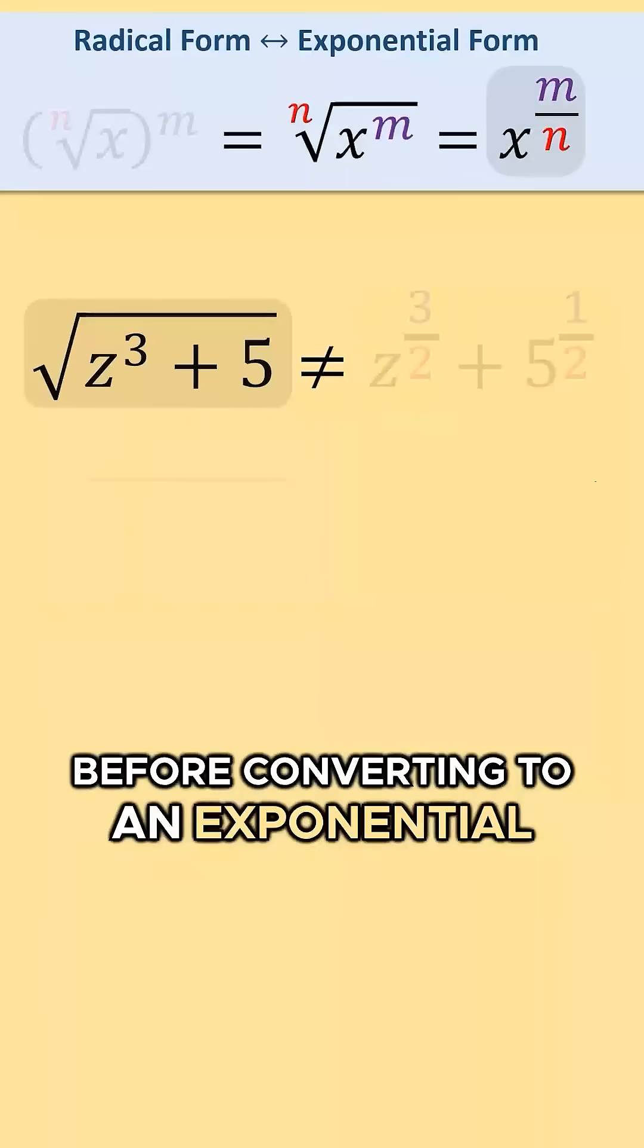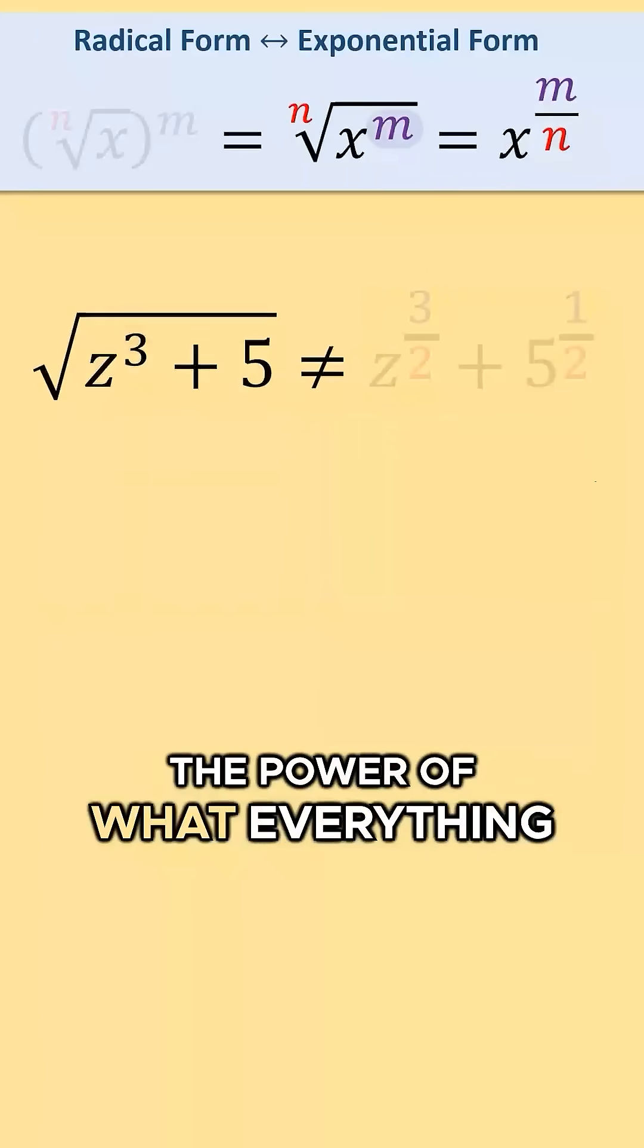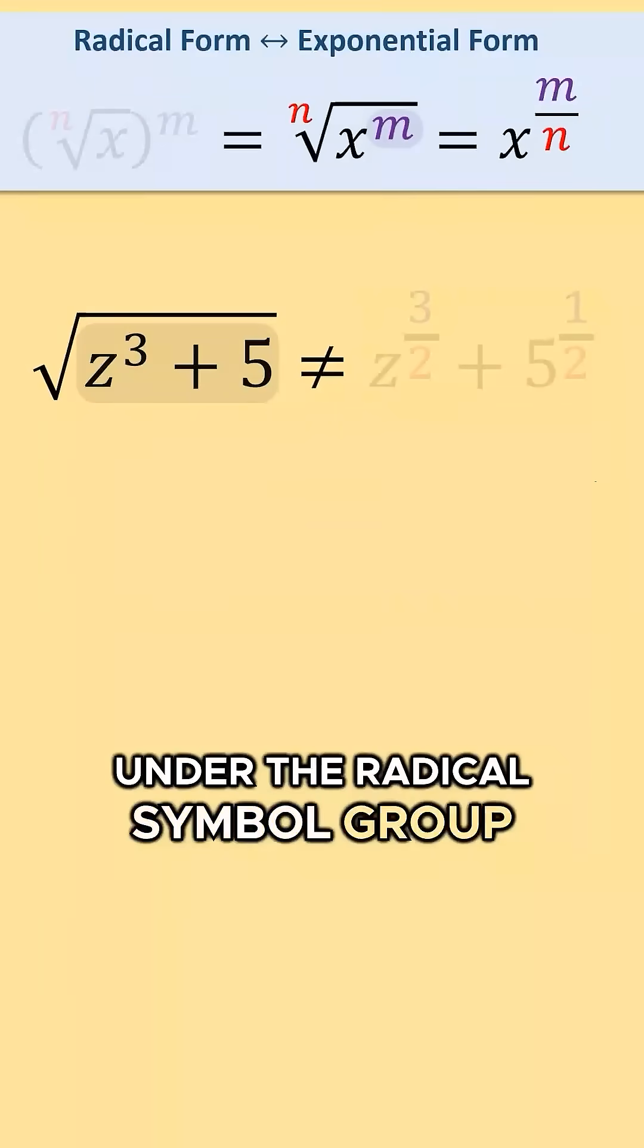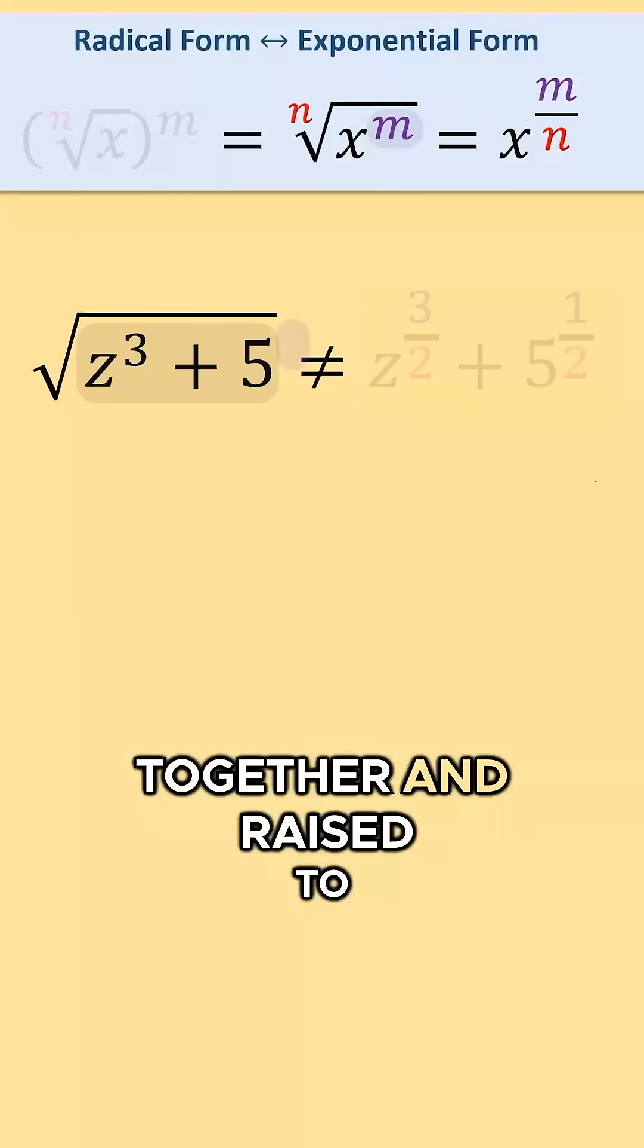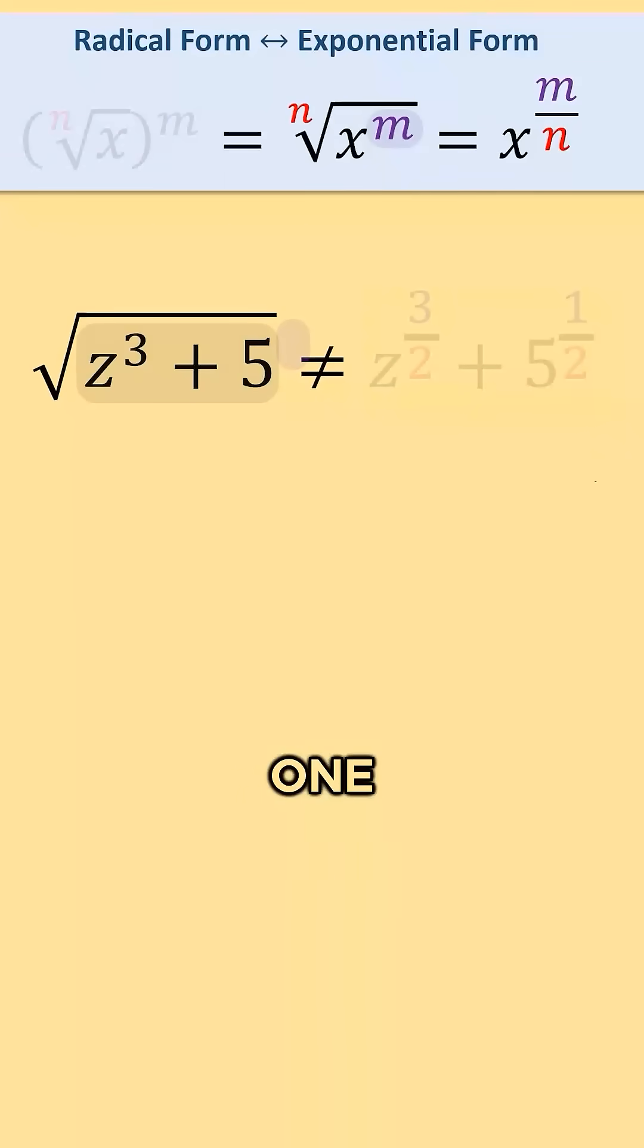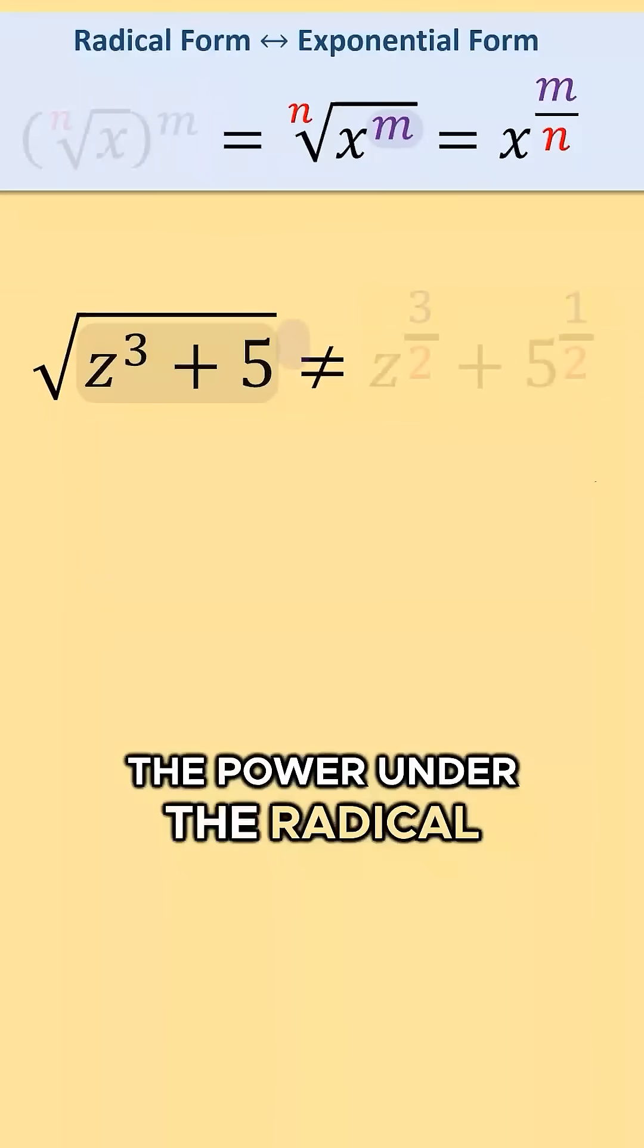Before converting to an exponential expression, we need to find the power of what everything under the radical symbol grouped together is raised to. In this instance, when everything is not grouped together and raised to a power higher than 1, we can assume that the power under the radical is 1.